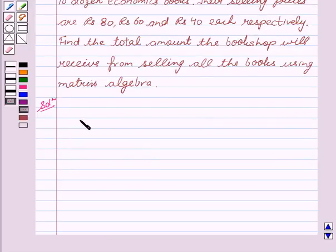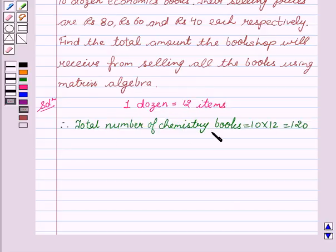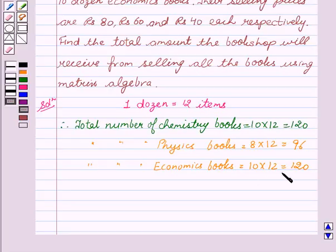Let's start with the solution. As we all know that 1 dozen equals 12 items. Therefore, total number of chemistry books equals 10 into 12 equals 120. Total number of physics books equals 8 into 12 equals 96. And total number of economics books equals 10 into 12 equals 120.